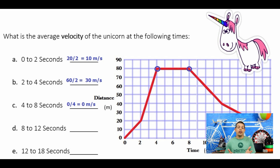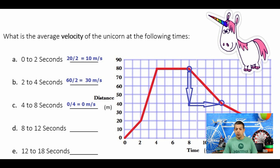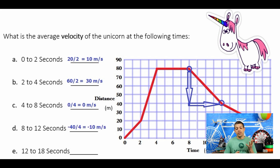For 8 to 12 seconds, the slope is actually declining — it's going to be a negative number. We go from 80 meters at the 8-second mark all the way down to 40 meters, so we go backwards 40 meters. That's negative 40 divided by 4 seconds, giving negative 10 meters per second.